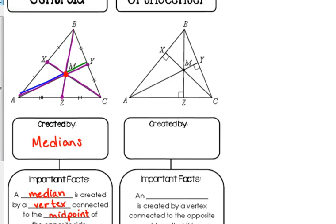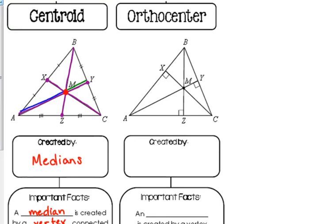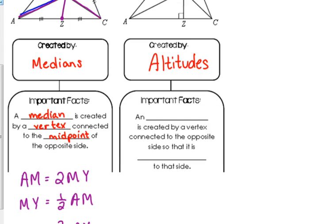The last relationship we have is the orthocenter. The orthocenter is created by the altitudes. An altitude, you should have heard that term before. An altitude is the perpendicular height. So an altitude is created by a vertex connected to the opposite side so that it is perpendicular to that side.